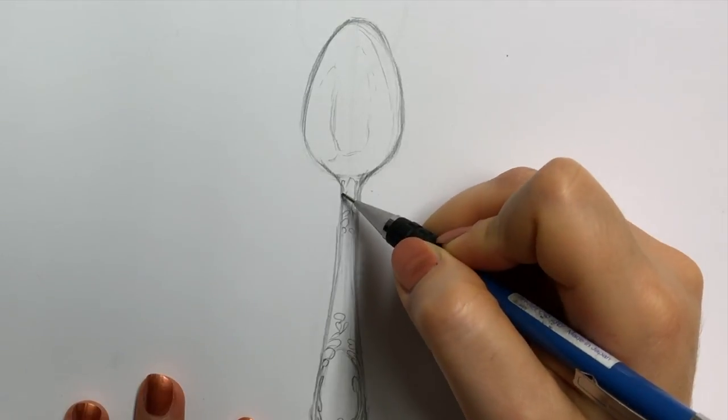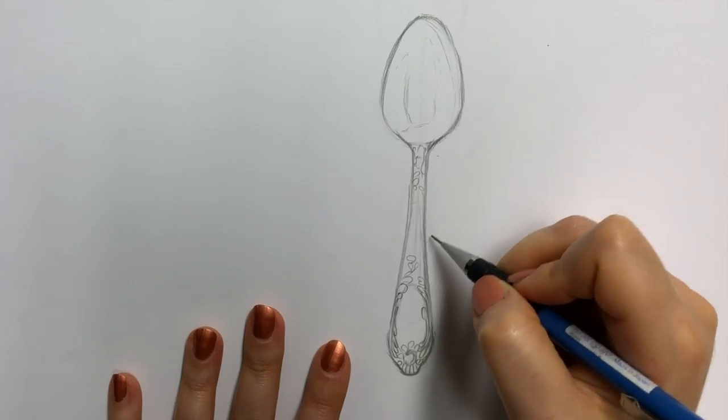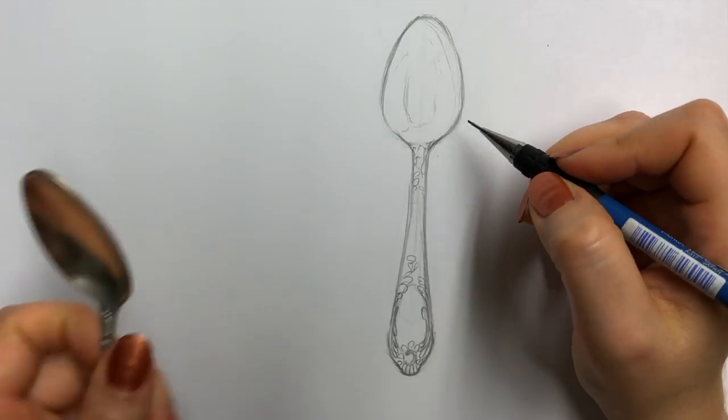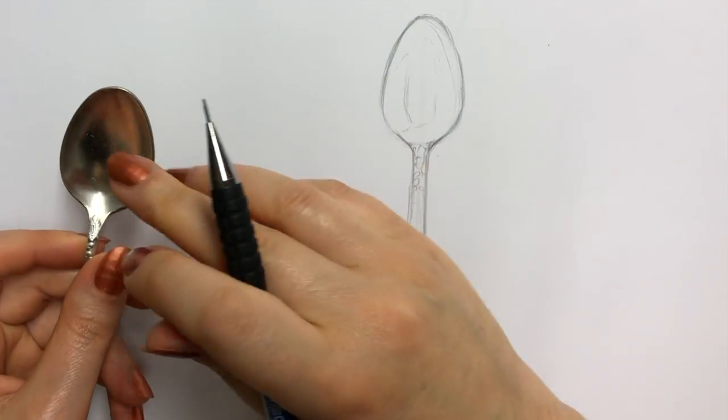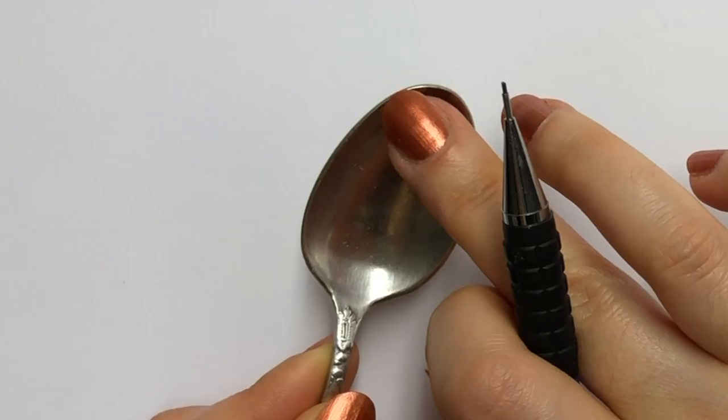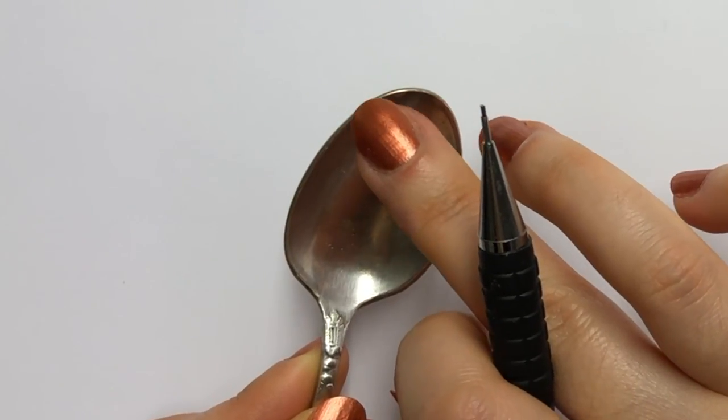And then this here catches some light on the side. Another thing I want you to pay attention to, I'll actually bring that back in. There's also a thickness to the spoon. I don't know if you can see that. I'll just, yeah, there. See that little highlight there?